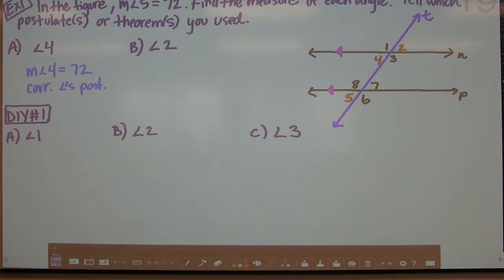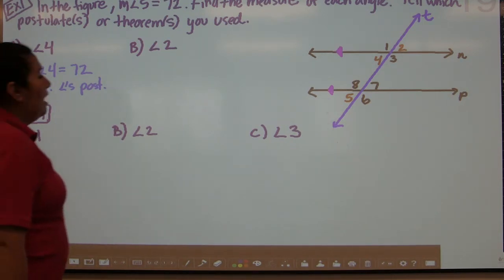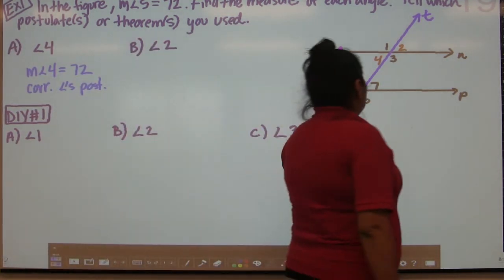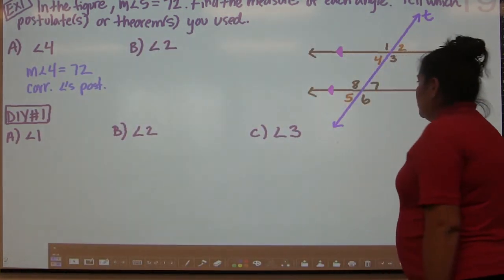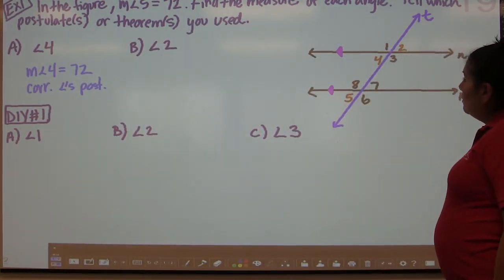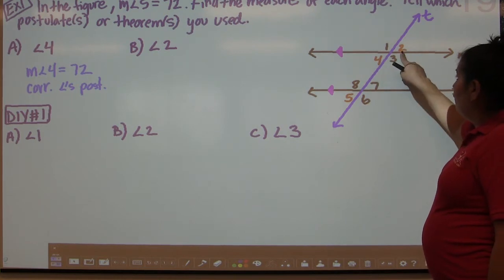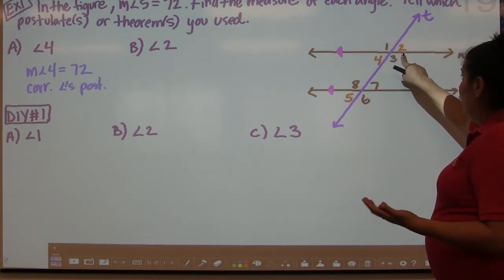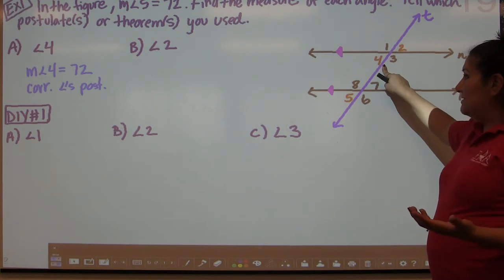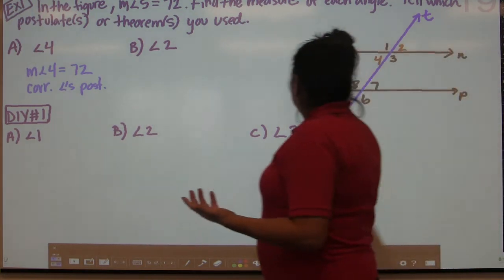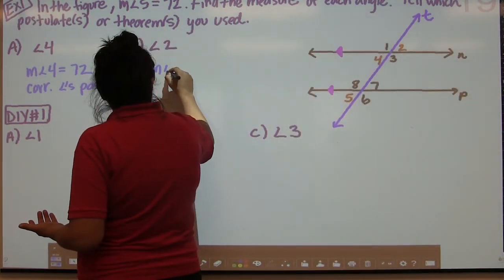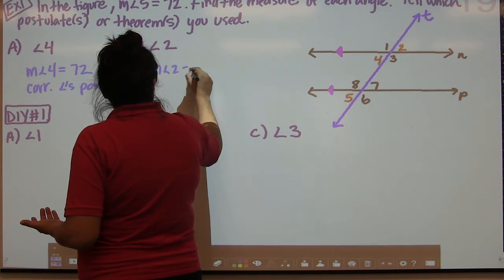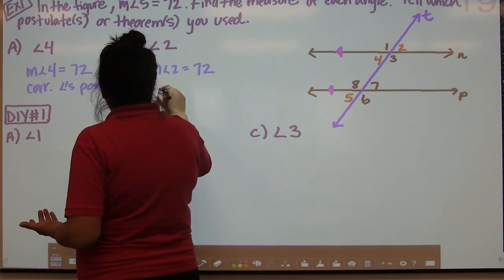In part B, they're asking us about angle 2. Angle 2 is not corresponding with angle 5, but we know that angle 2 and angle 4 are vertical angles. Since we already learned in part A that angle 4 is 72, the measurement of angle 2 is also 72 because of vertical angles.